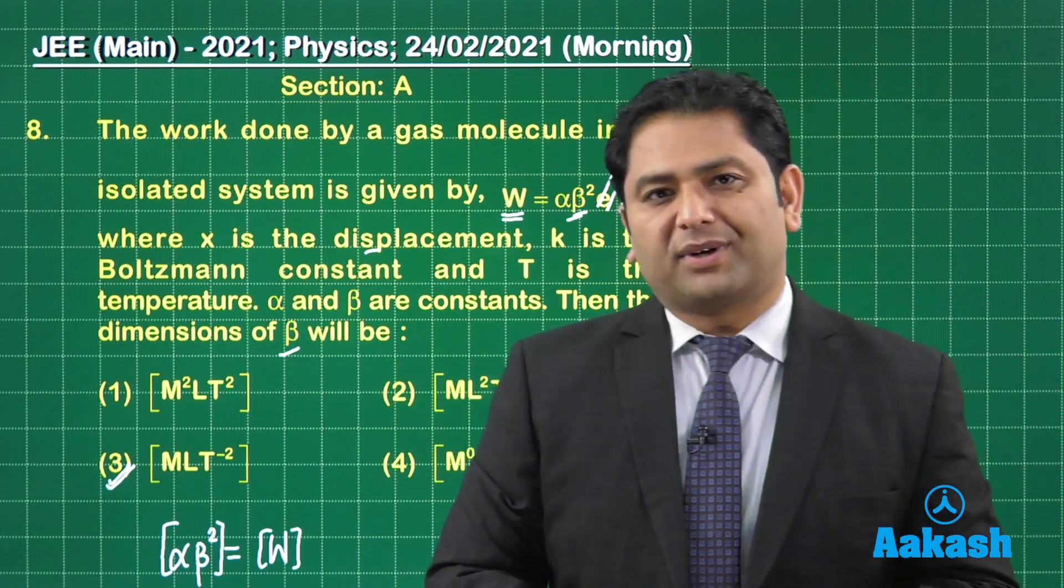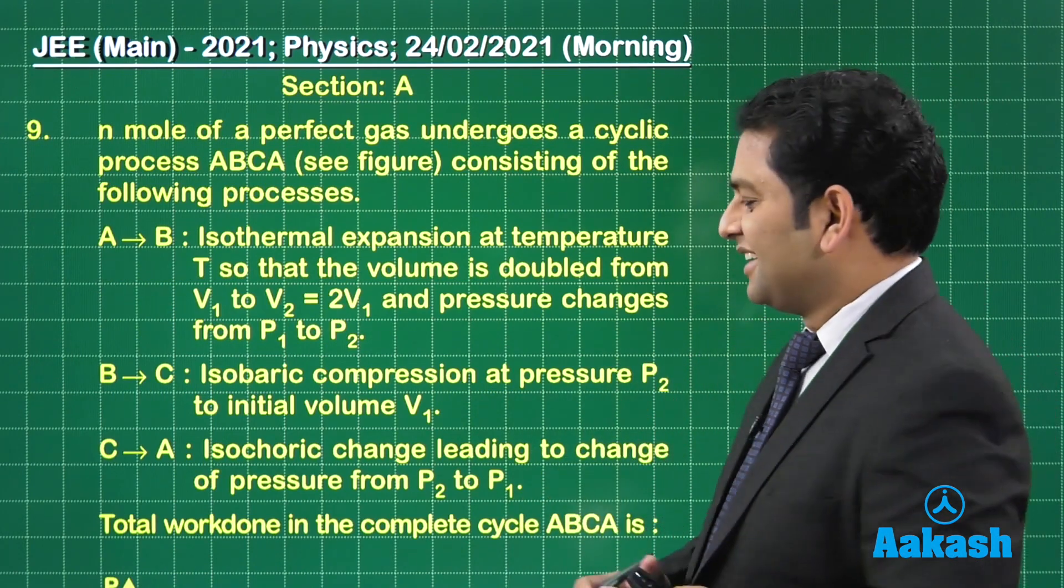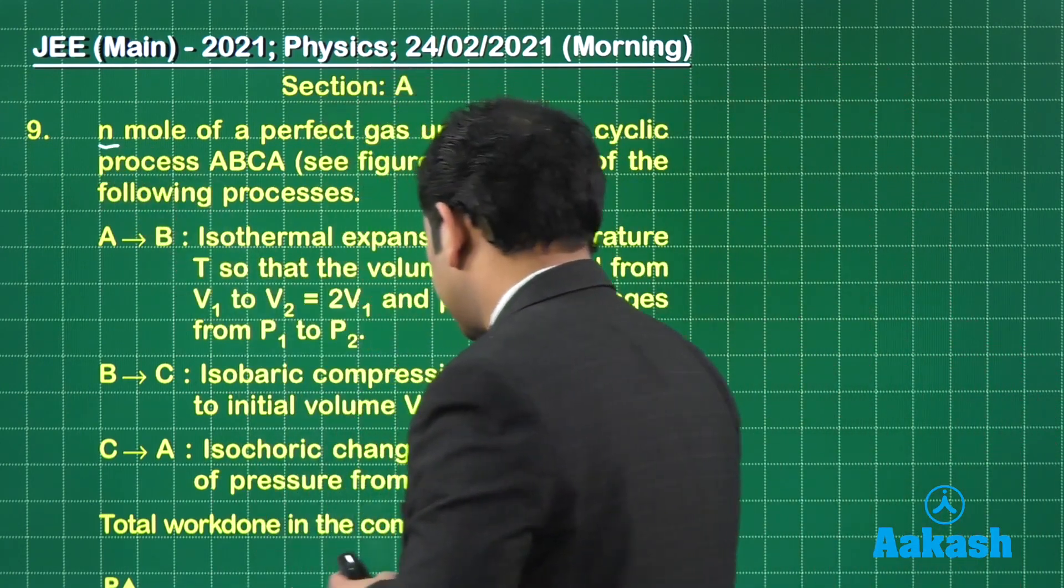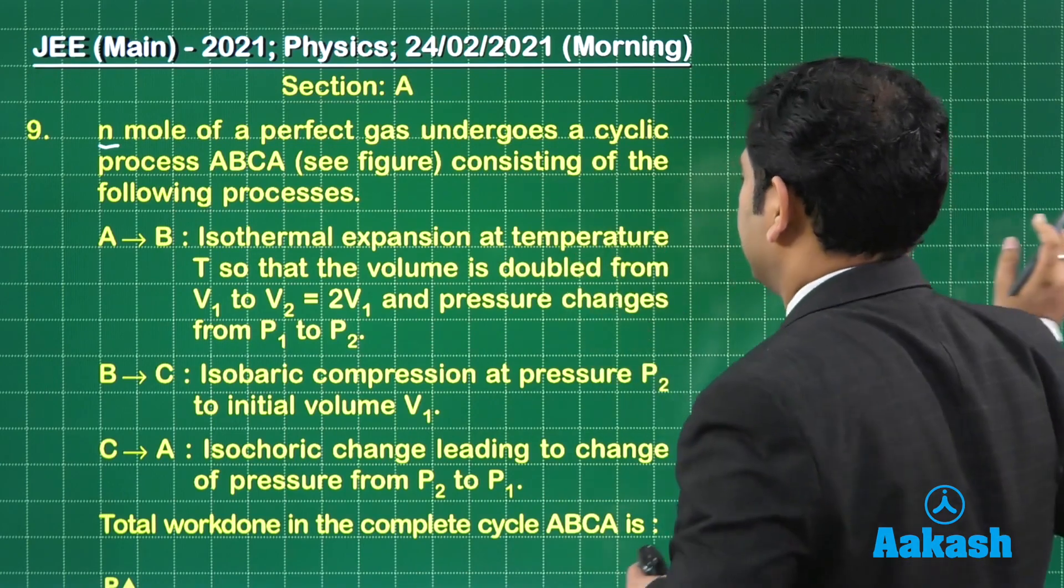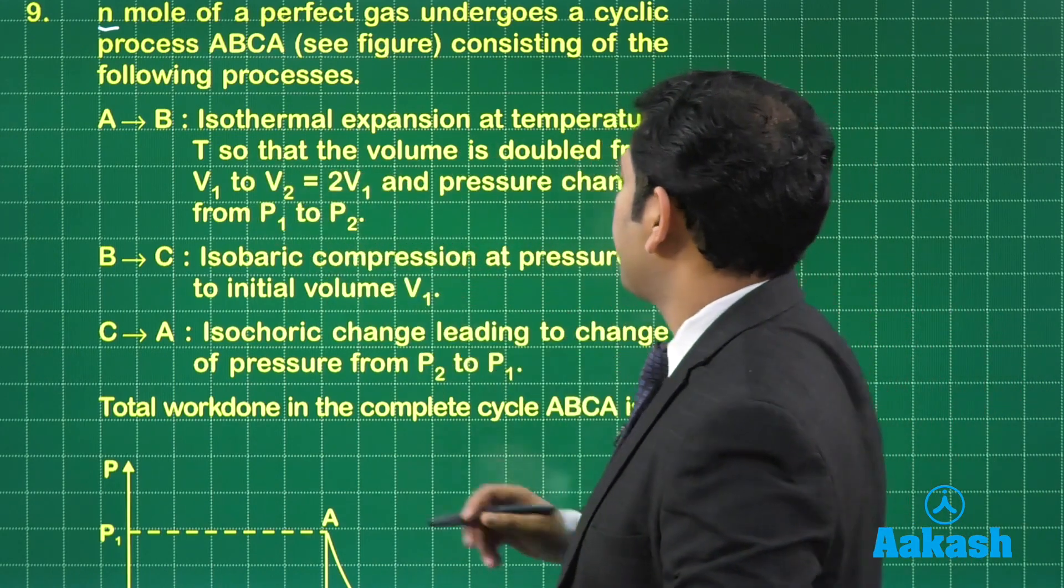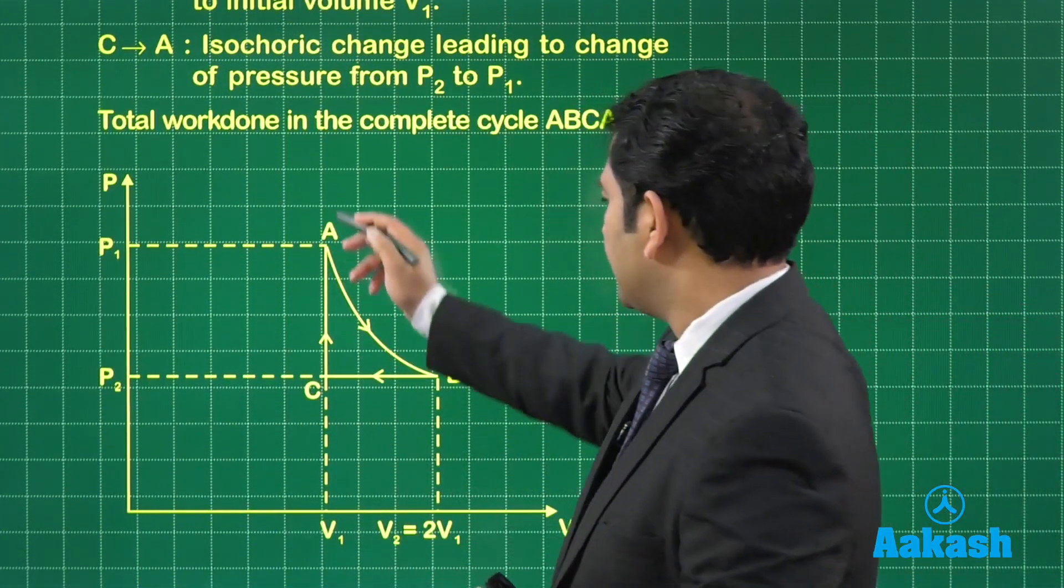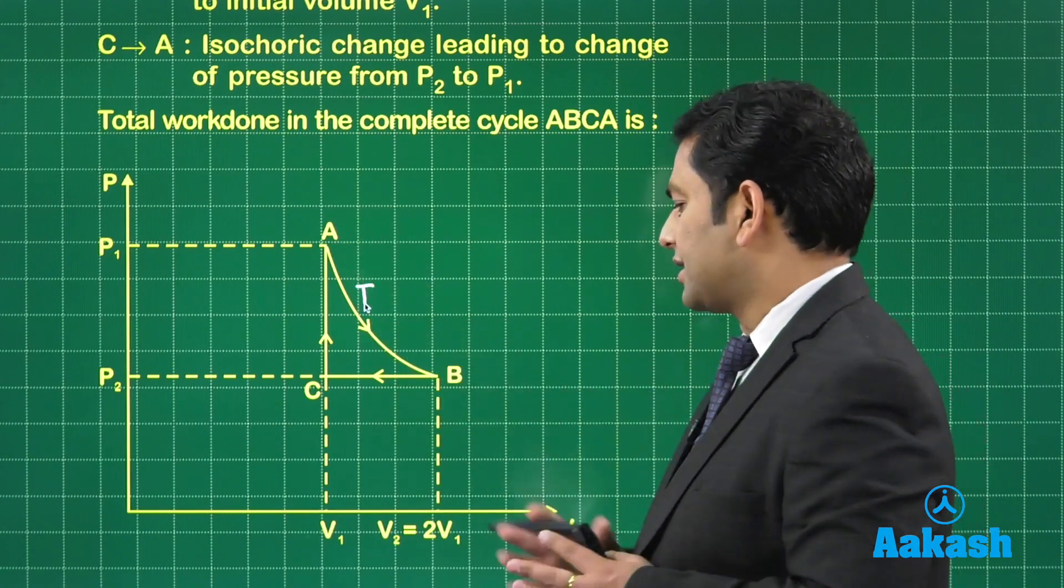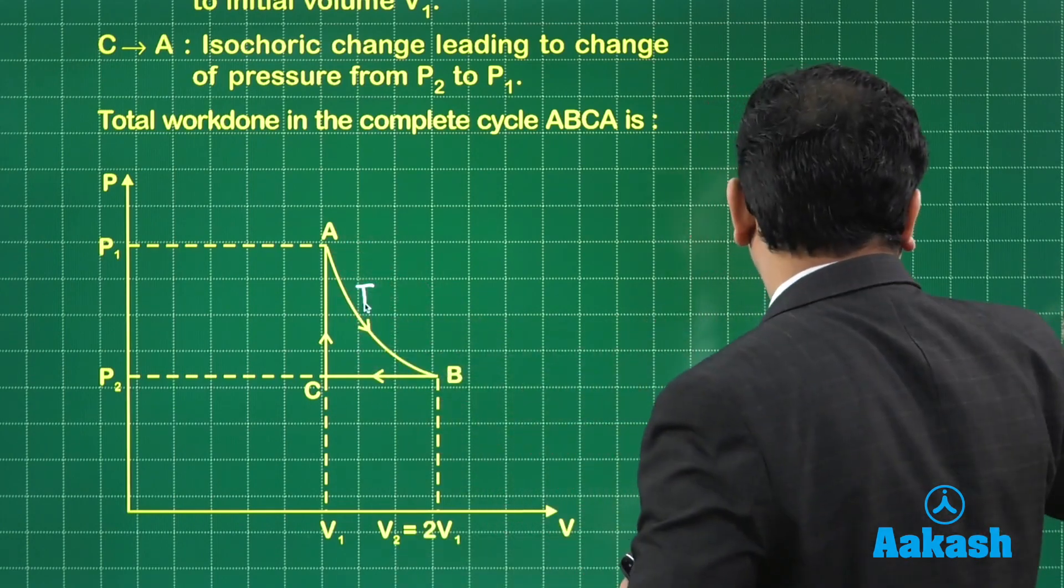Let's go to the ninth question. It's something related to thermodynamics. Don't get scared with the question, let's go step by step. N moles of a perfect ideal gas undergoes a cyclic process. A to B is isothermal expansion at temperature T. Here is AB, and in the entire process AB, the temperature is capital T. It's a rectangular hyperbola. The volume has doubled, that means the pressure would be halved.